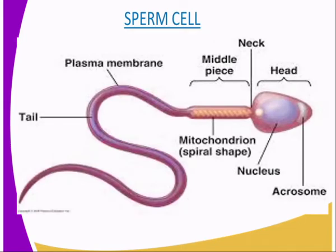Our first specialized cell is the sperm cell. As you can see from our diagram, the sperm cell has the head, the acrosome which is on the head, the nucleus, the mitochondrion which are spiral in shape, the middle piece, the plasma membrane, and the tail. The sperm cell is divided into three parts: the head, the middle piece, and the rear part.